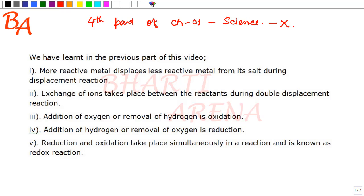In the previous part, we have learnt that more reactive metal displaces less reactive metal from its salt during displacement reaction, and exchange of ions takes place between the reactants during double displacement reaction. Addition of oxygen or removal of hydrogen is oxidation, and addition of hydrogen or removal of oxygen is reduction. We have also learnt that these two are commonly known as redox reaction. Reduction and oxidation take place simultaneously in a reaction and is known as redox reaction.